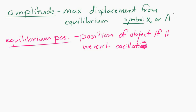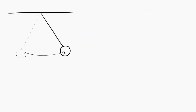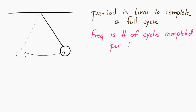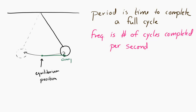The unit for amplitude is the meter. Using the example of an oscillating pendulum: the period is the time it takes for the pendulum to complete one entire cycle; the frequency is the number of cycles completed per second; the equilibrium position is where all forces are balanced — at the bottom — and the amplitude is the maximum displacement from that equilibrium position.